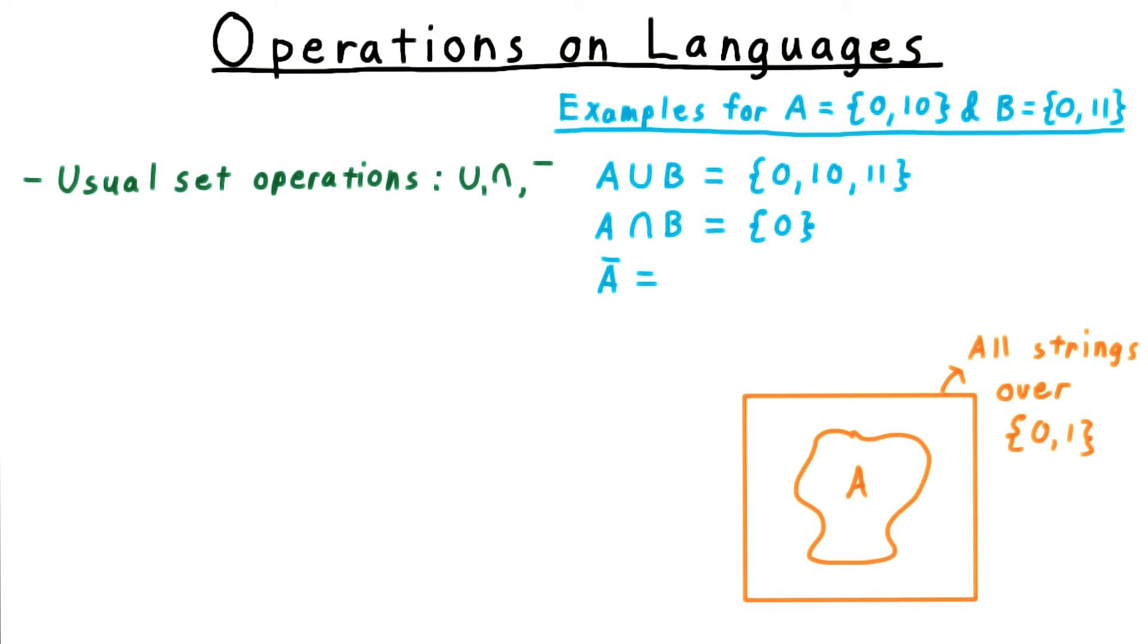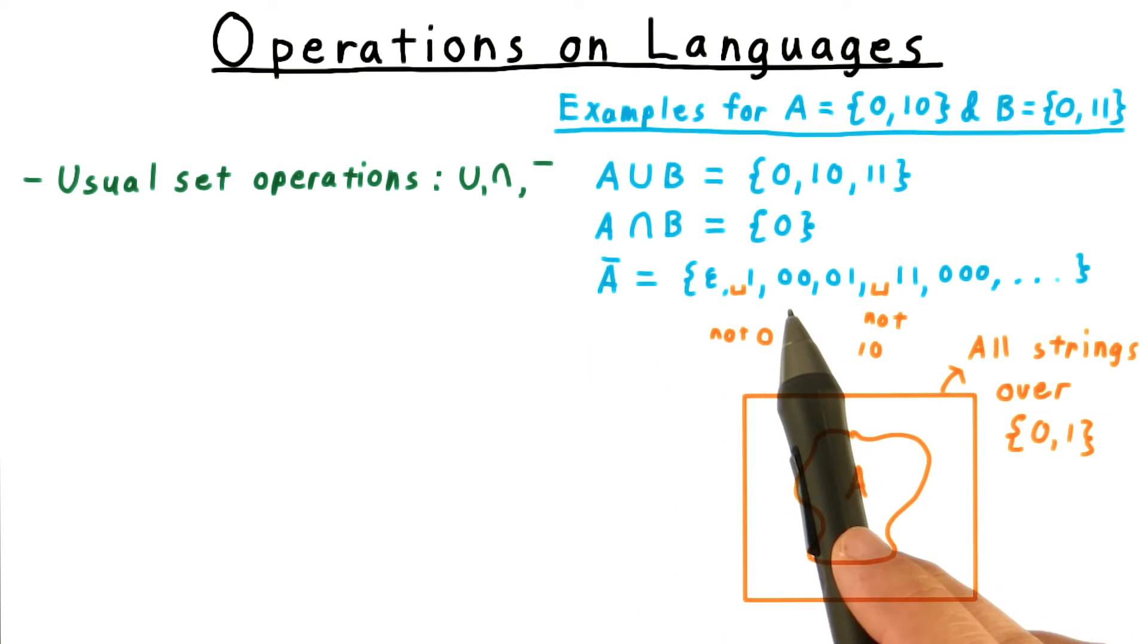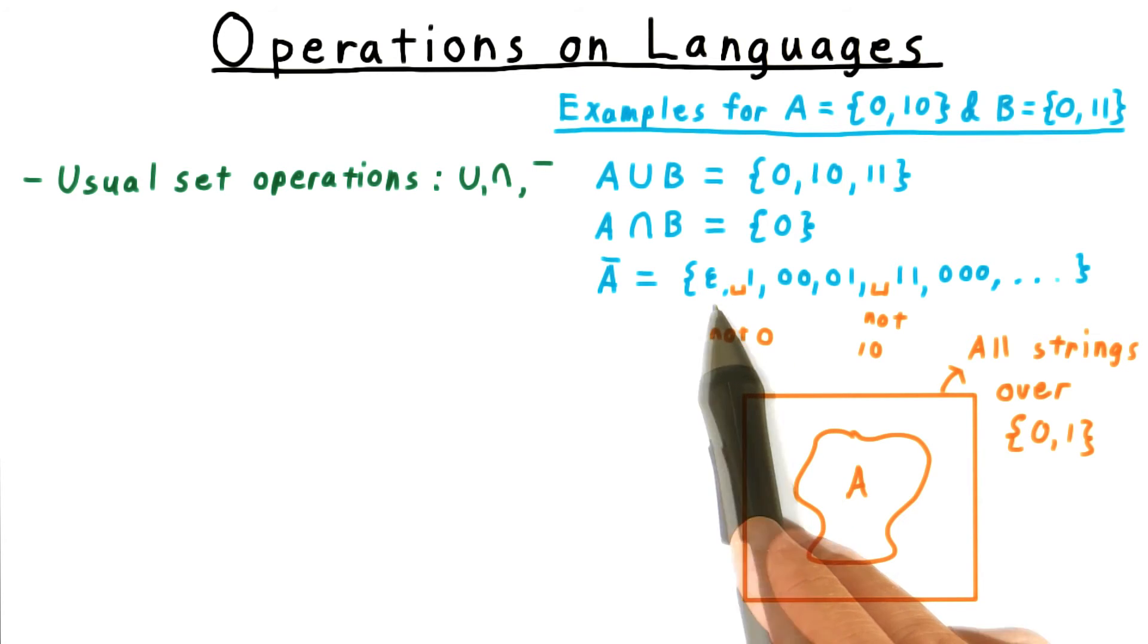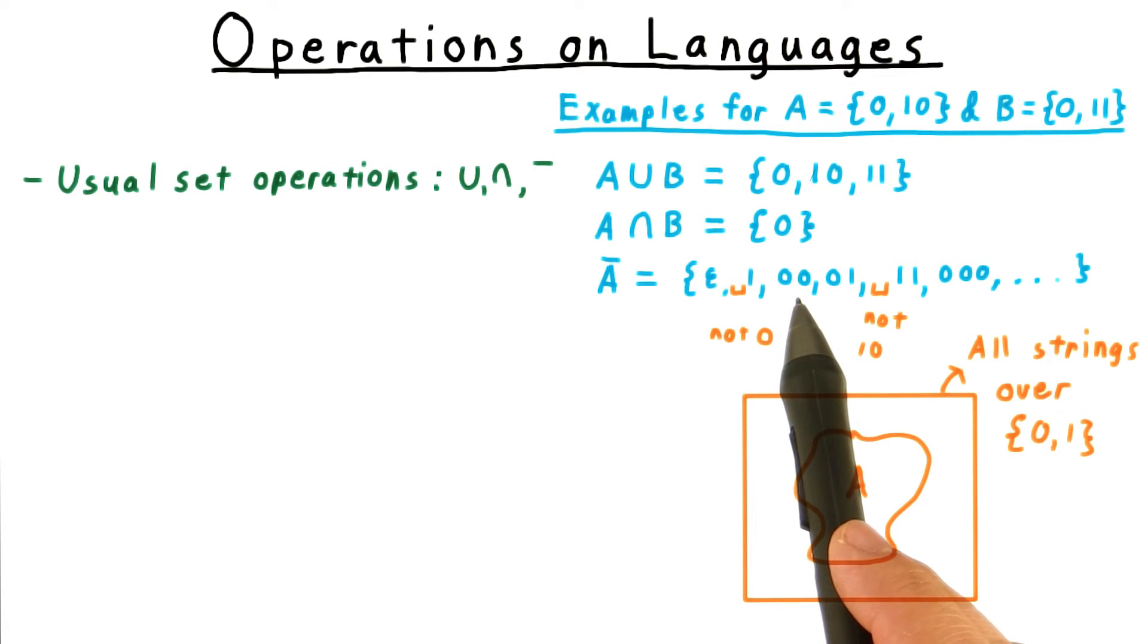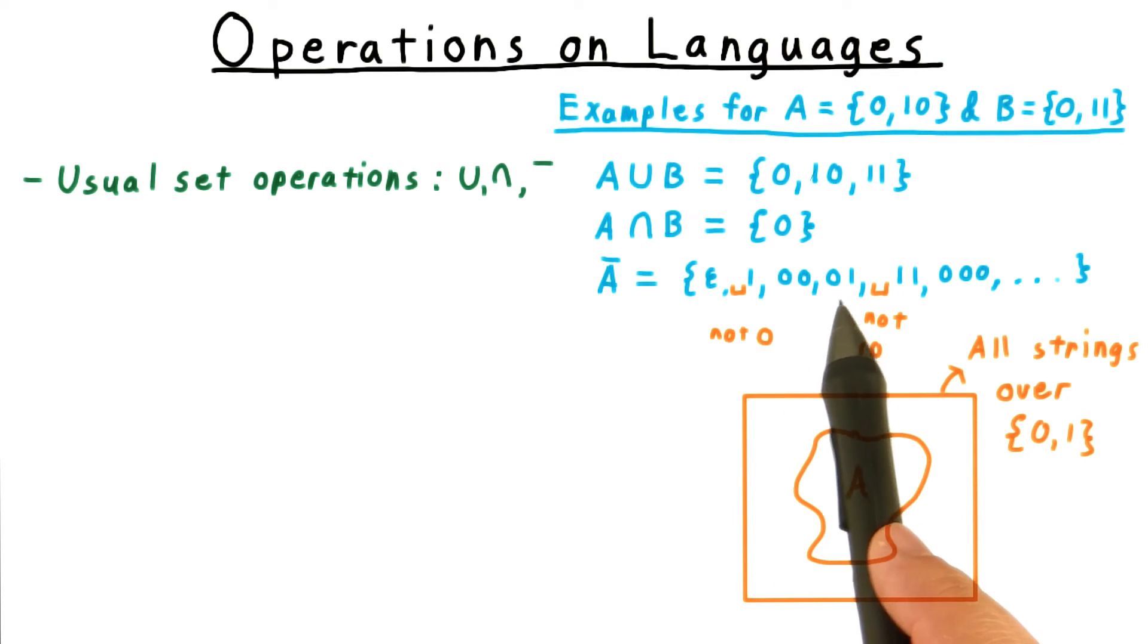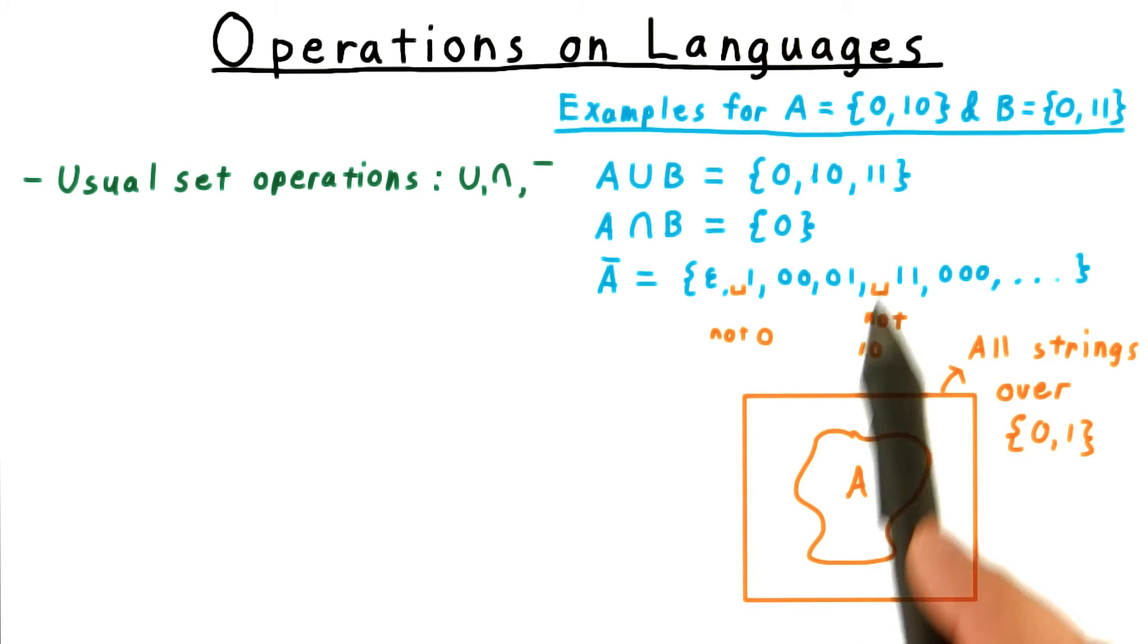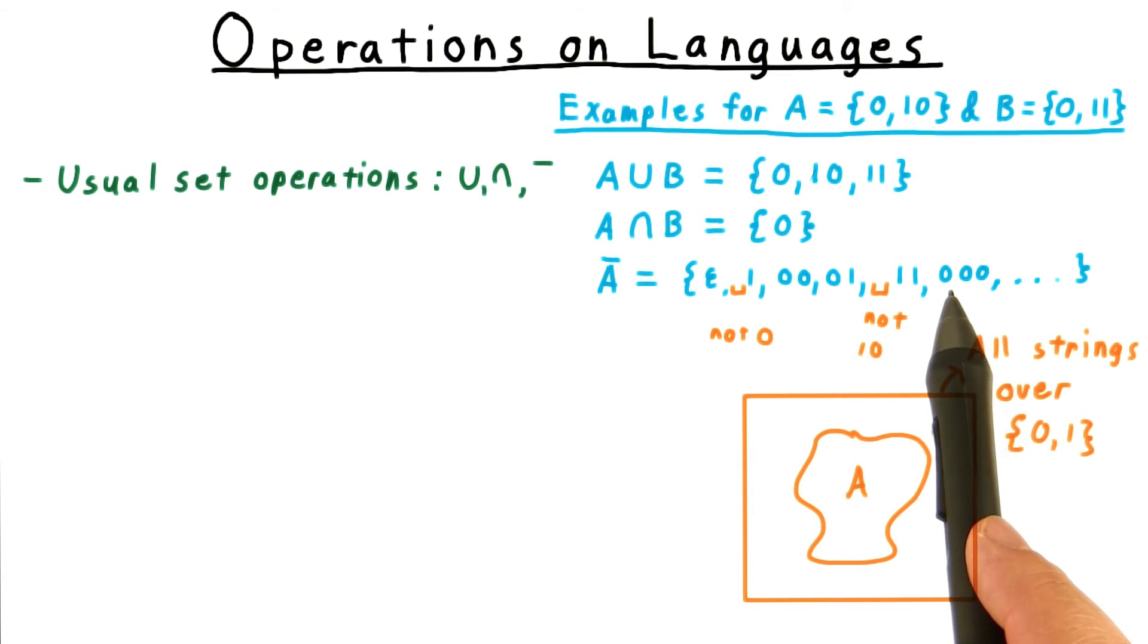In this case, the complement of A will be infinite, including the empty string but not 0. It will include 1, 00, 01, but not 10. However, it will include 11, 000, and so on and so forth for all longer strings.